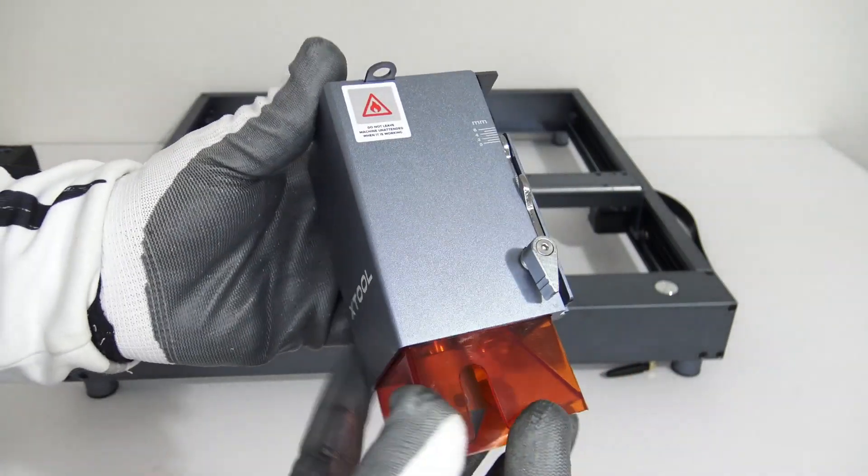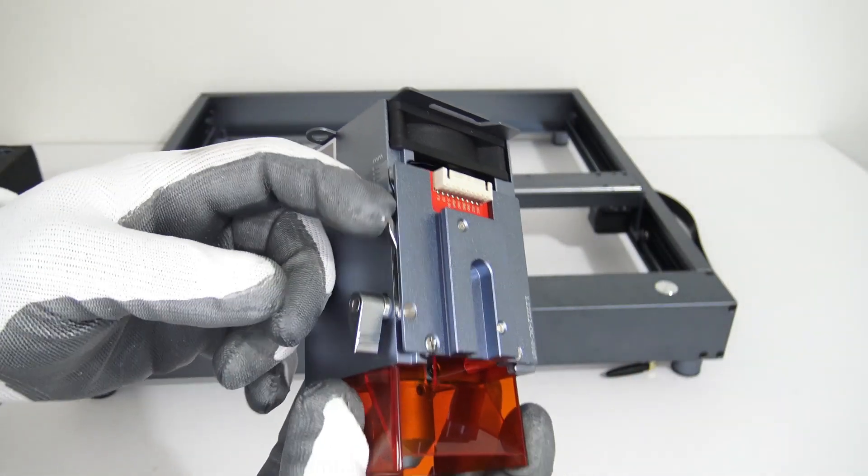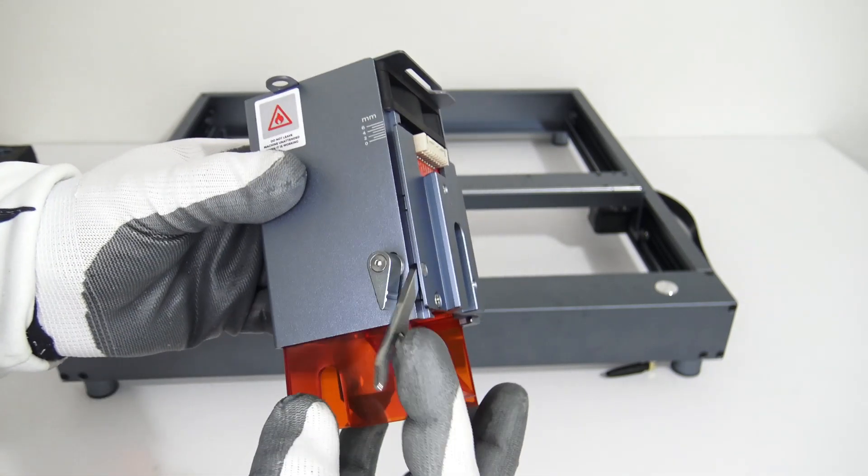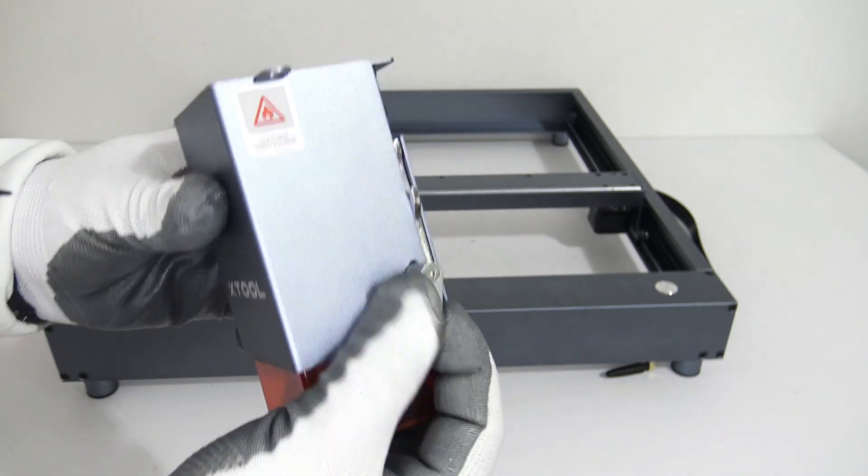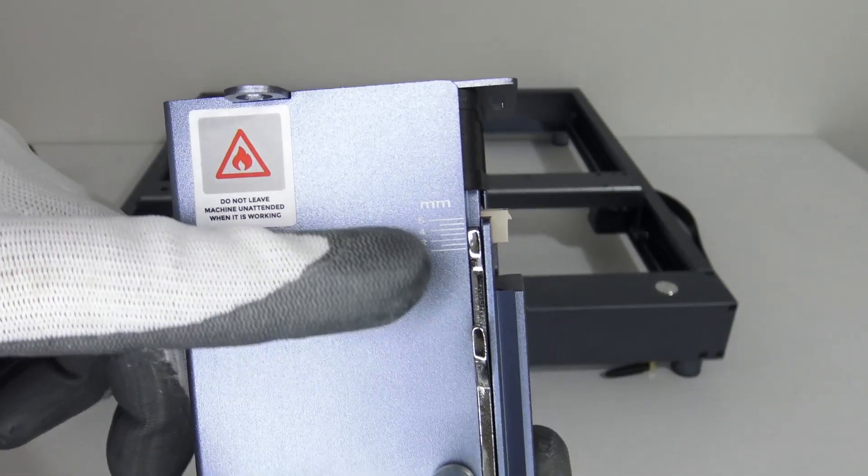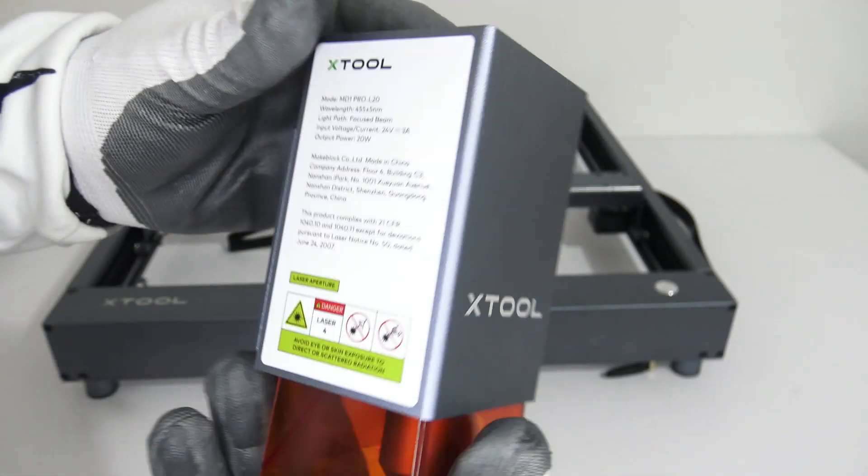Next to the laser module, there is a swiveling arm which you pull out when you want to focus the laser. It assures that you drop the head at the correct distance from the material. Then you tighten the thumb screw and swivel the arm back up.